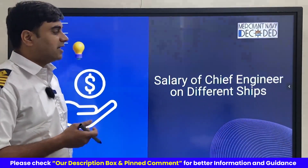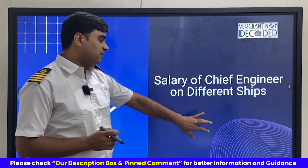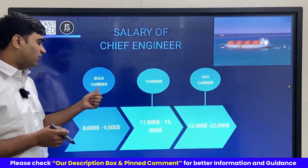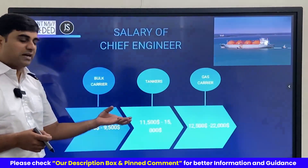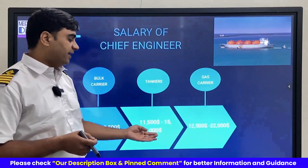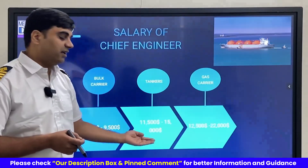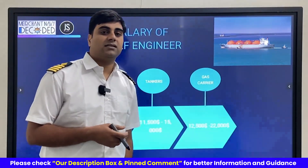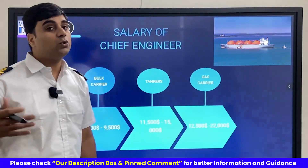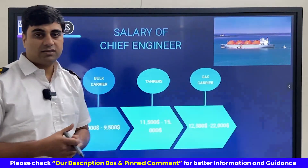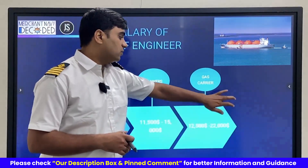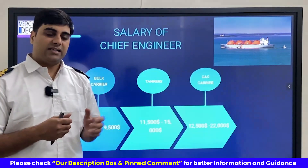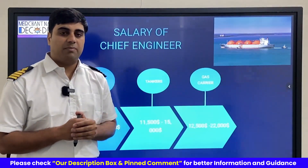Regarding the salary of a chief engineer on different ships: on bulk carriers, we get eight thousand to nine thousand five hundred dollars per month. On tankers, it can go up to fifteen thousand for a senior chief engineer. However, on gas carriers, it is up to twenty-two to twenty-five thousand dollars per month.